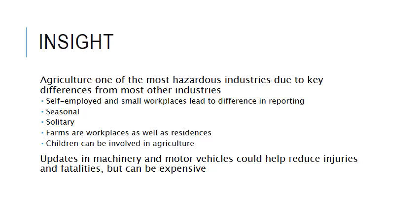Children are more involved in the agricultural industry than any other industry, but injuries and fatalities among children are not recorded in the same way or by the same organizations as those among adult workers. In addition, children who work on farms are not protected by child labor laws. Updates in machinery and motor vehicles could help reduce injuries and fatalities in agriculture, but these updates can be expensive, and it is difficult for agricultural workers to upgrade equipment that is still functional, even though it may be more dangerous.